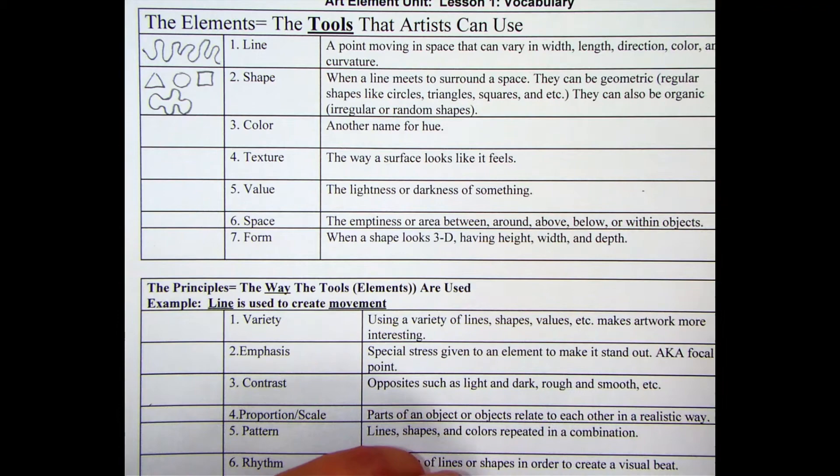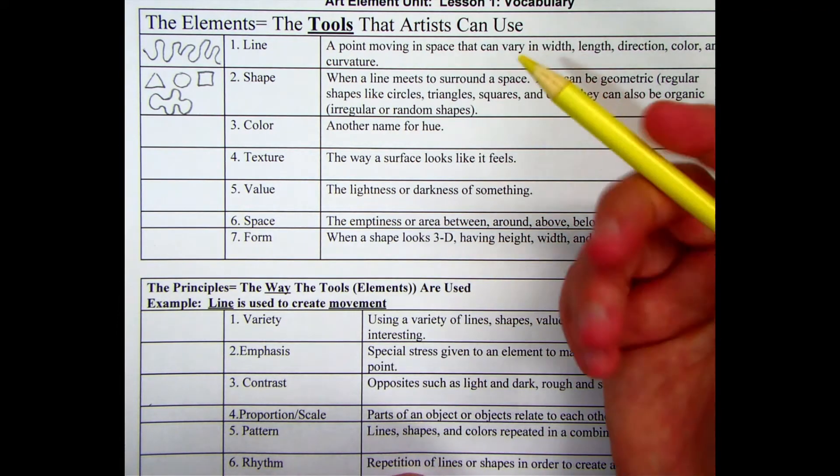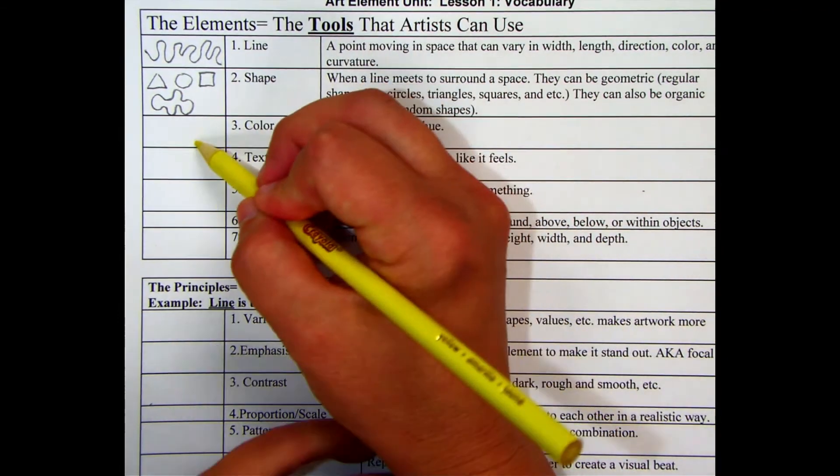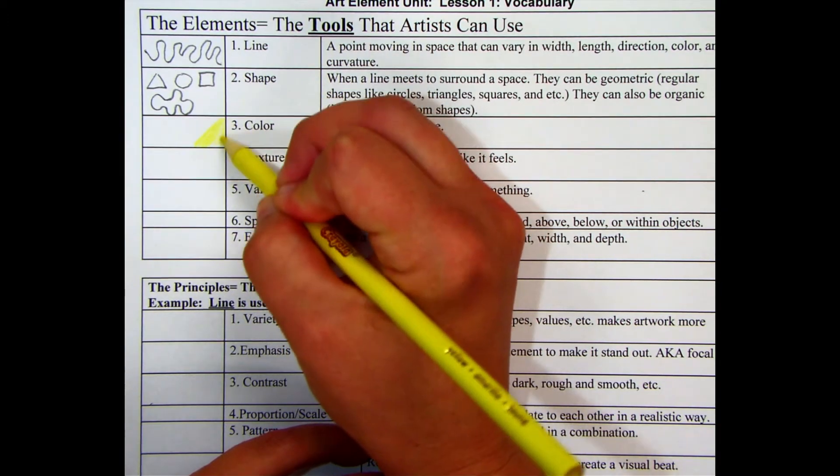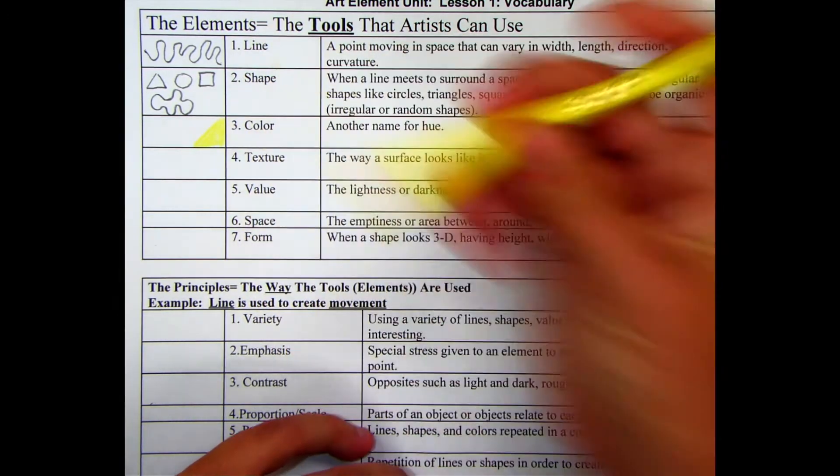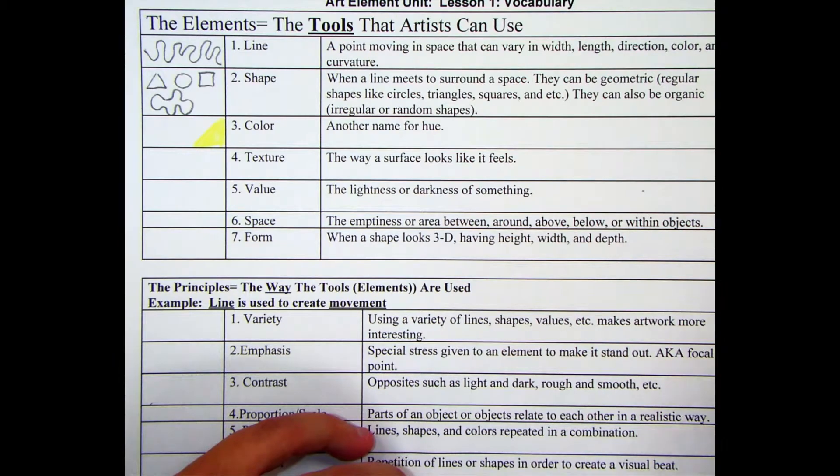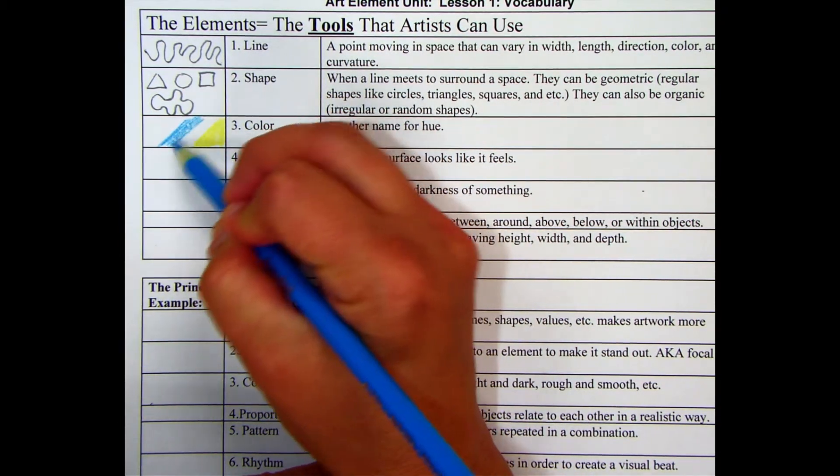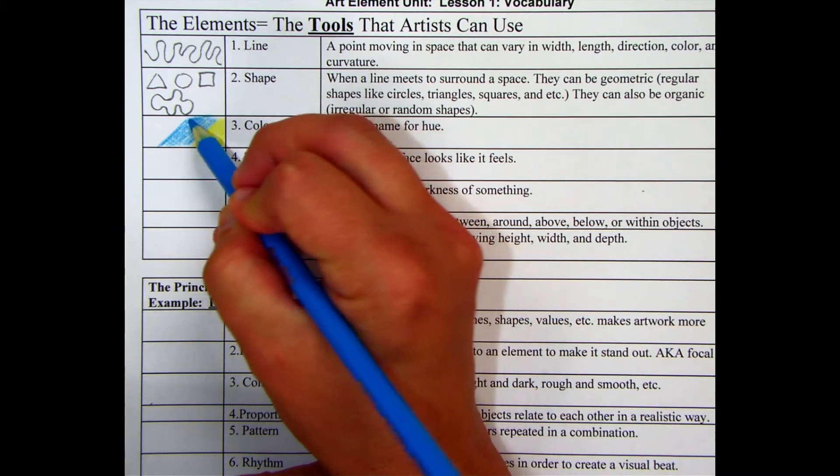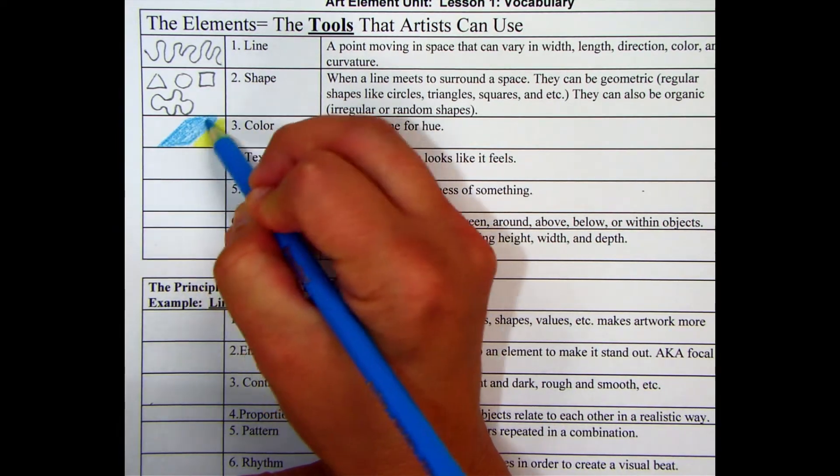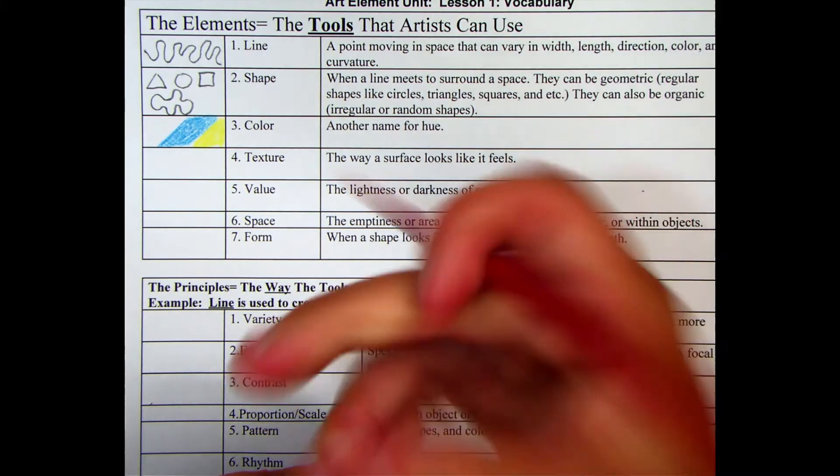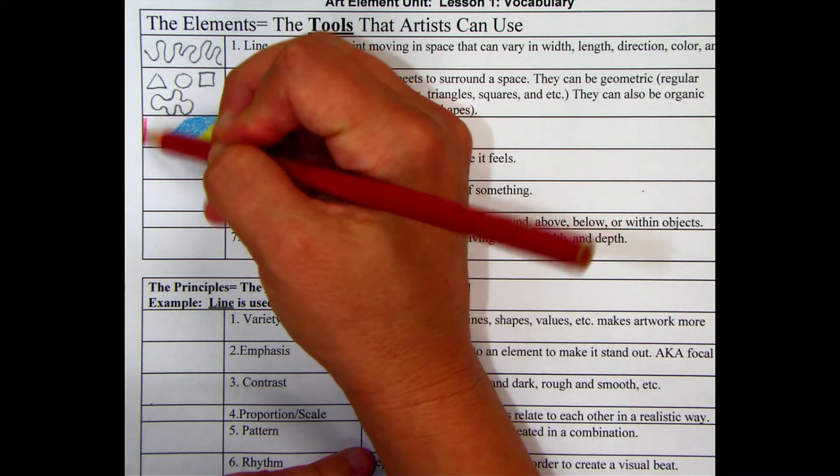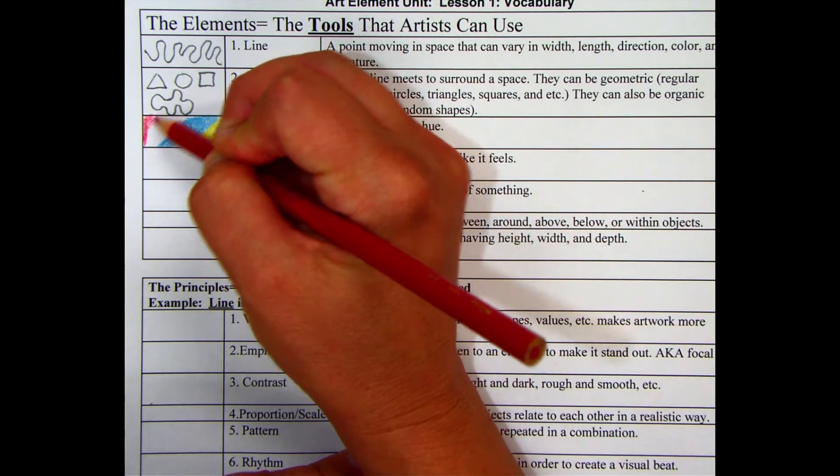For color, you may have colored pencils. You may not. So if you have them, you can color this in. Your primary colors are going to be red, yellow, and blue. So you can color your primaries in there. These primaries can make up any other color when they are mixed together. So they're the foundation of the color wheel.